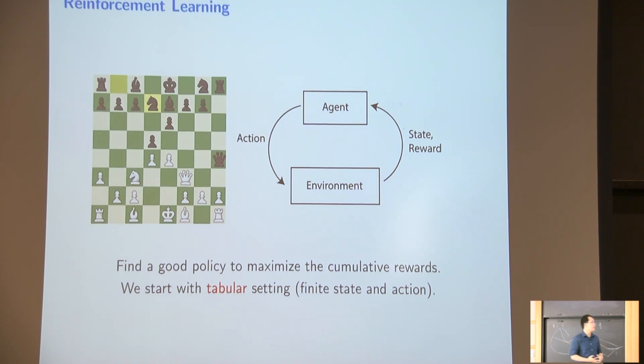So specifically, reinforcement learning framework assume we have an agent. We have an environment. So what we do is, for each agent, agent need to pick an action and then interact with environment. And environment will feedback what is the next state you transition to, and what is the reward you have.